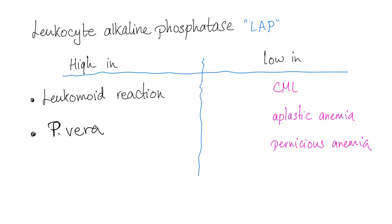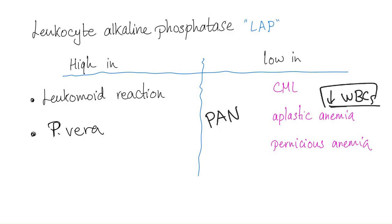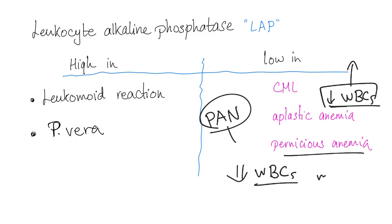Leukocyte alkaline phosphatase can be high in cases of leukomoid reaction, as well as polycythemia vera, which we will talk about in a later video. LAP score is low in CML, as the cells are less mature than in leukomoid reaction. In aplastic anemia, there is pancytopenia, meaning decreased white blood cells — so fewer mature white blood cells are available, resulting in a low LAP score. Similarly, in pernicious anemia, you can also have pancytopenia, leading to fewer mature white blood cells and a low LAP score.